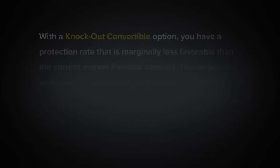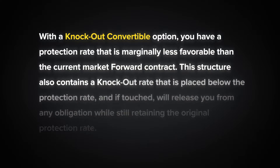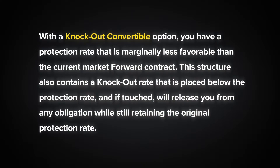With a knockout convertible option, you have a protection rate that is marginally less favorable than the current market forward contract. This structure also contains a knockout rate that is placed below the protection rate, and if touched, will release you from any obligation while retaining the original protection rate.